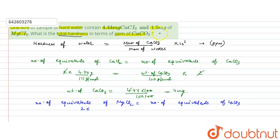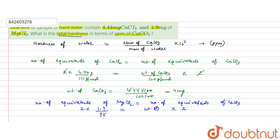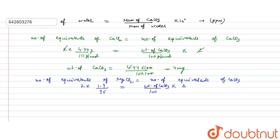The charge on the magnesium ion is +2, so valency factor is 2. Number of moles of MgCl₂ = 1.9 mg / 95 g per mol. This equals the moles of CaCO₃ multiplied by its valency factor of 2, divided by its molecular weight of 100 g/mol. We solve for the weight of calcium carbonate.